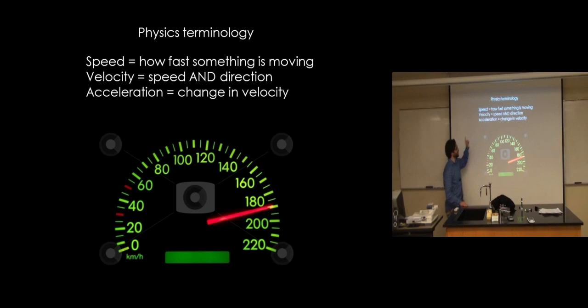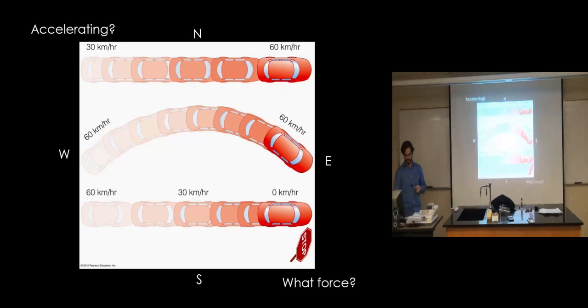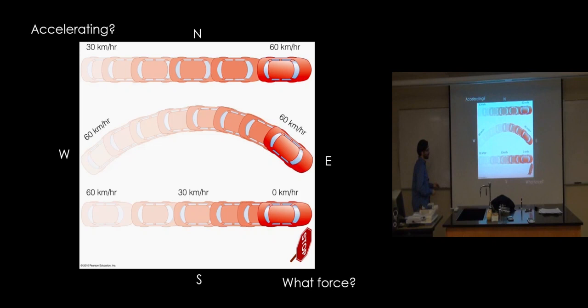So with that distinction in mind, acceleration is the change in velocity over some amount of time. So if it's the change in velocity over some amount of time, is acceleration a vector? Does it have a direction? Yes. It absolutely does. And you get to reason by drawing arrows and subtracting arrows. And I guarantee that at least somebody will get one of these wrong.